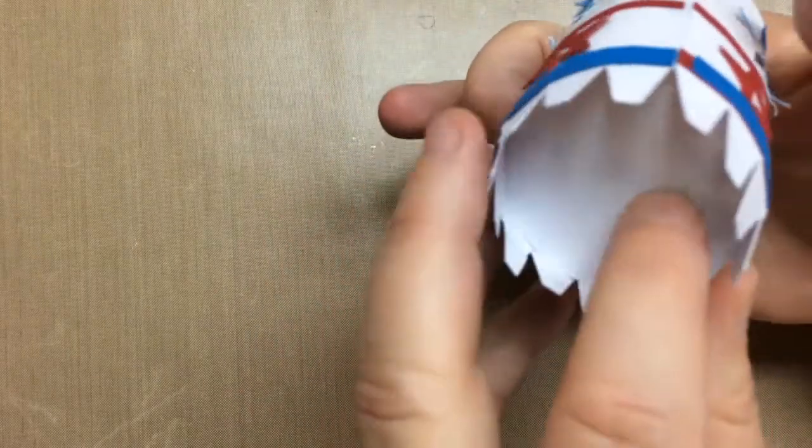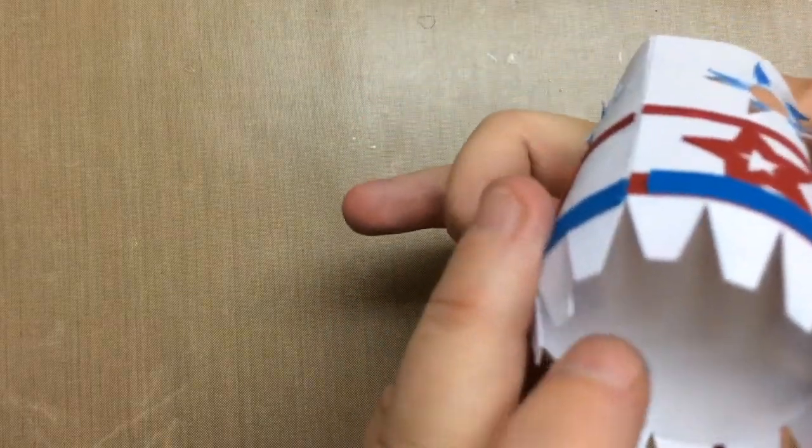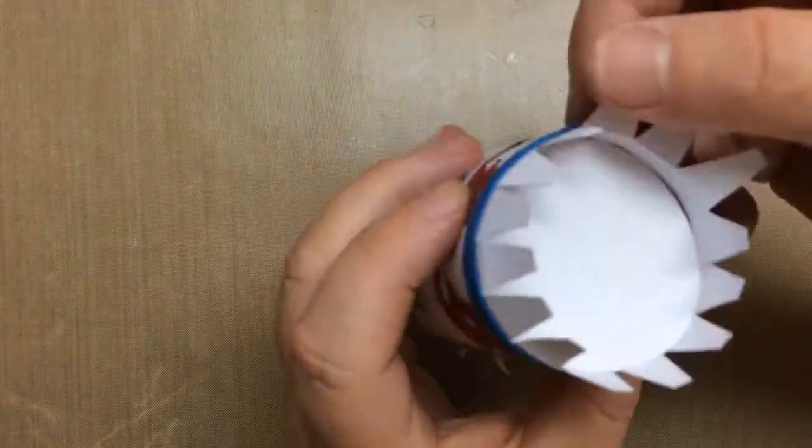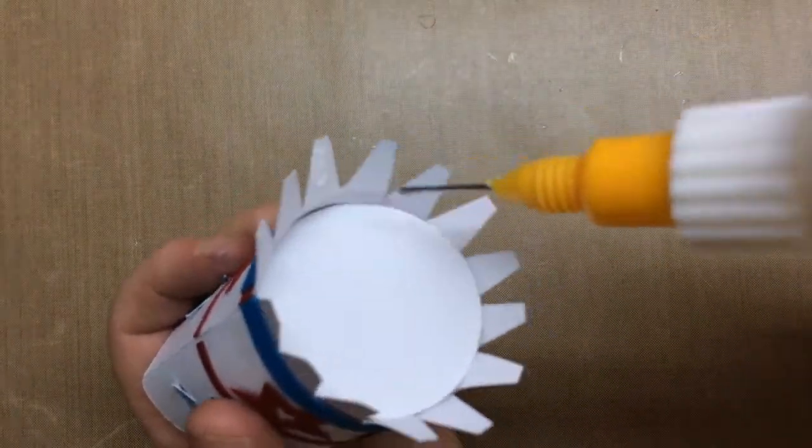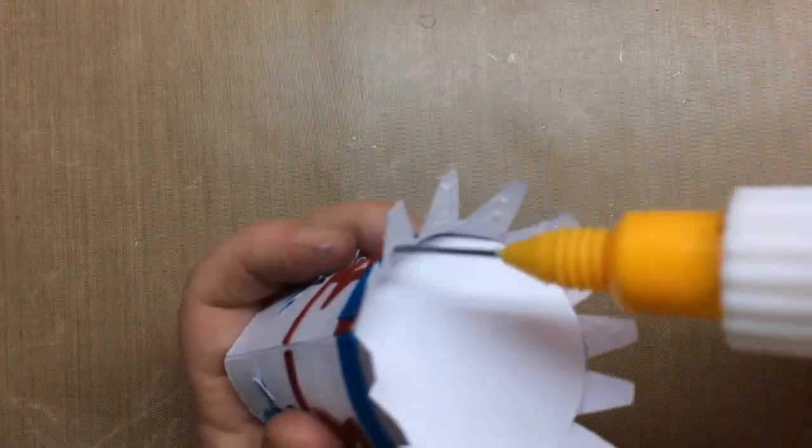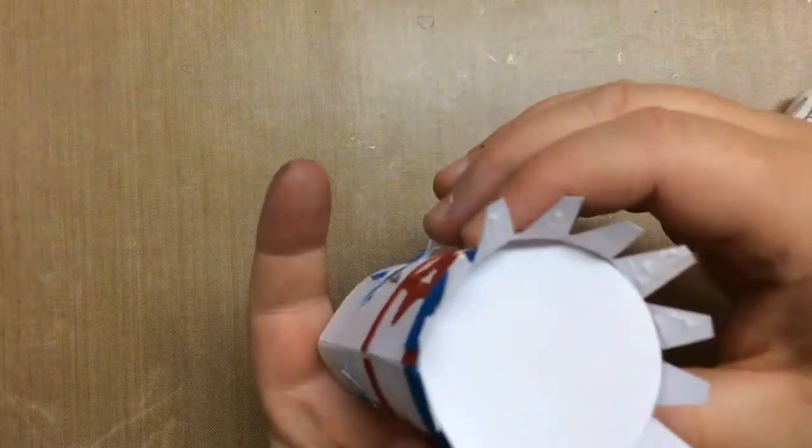And then once that's done we'll have an outside panel to cover it. Now you might want to apply some pressure from within as you glue each of these tabs. That's helpful to keep them secure.